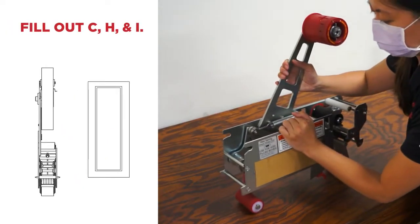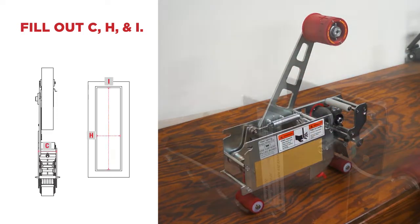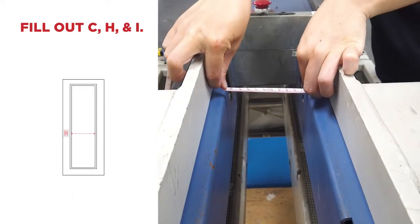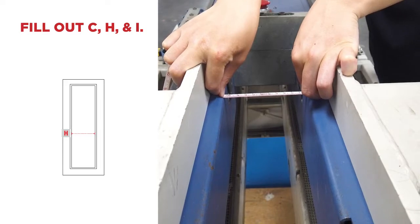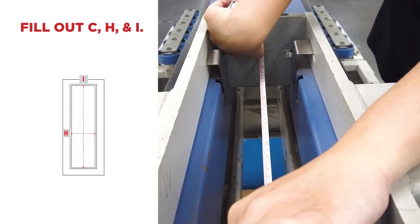If you selected Groove, you only need to fill out letters C, H, and I. C is the width of the current tapehead. H is the width of the tapehead cavity on your current machine. I is the length of the tapehead cavity on your current machine.